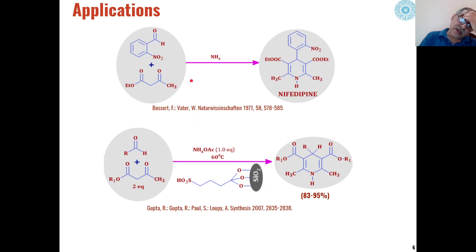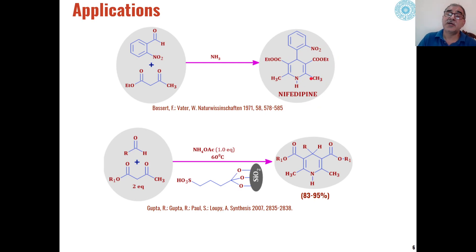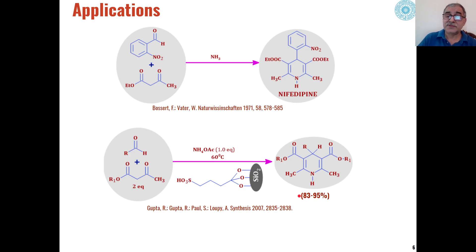A common example is the synthesis of nifedipine, a frequently used drug. When ortho-nitrobenzaldehyde is condensed with ethyl acetoacetate in the presence of ammonia, nifedipine — a dihydropyridine derivative — can be synthesized very easily. Recently, silica-based sulfonic acids have been used as catalysts for Hantzsch Dihydropyridine Synthesis; when aldehydes and beta-ketoesters are reacted with a nitrogen source in the presence of silica-sulfonic acid catalysts, dihydropyridine derivatives are obtained in good yields.